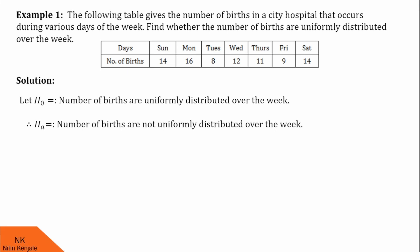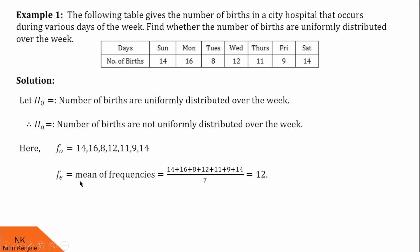Now, let us calculate test statistics. But for test statistics, we also want expected frequencies. These are the observed frequencies. Since we have to check whether these births are uniformly distributed or not, that means on each day the number of births are the same. We have to calculate the mean of these data values to obtain the uniform value. So here, observed frequencies are these. Expected frequency will be the mean of these frequencies, which I found to be 12. So we can say if births are uniformly distributed, then on each day there will be 12 births.